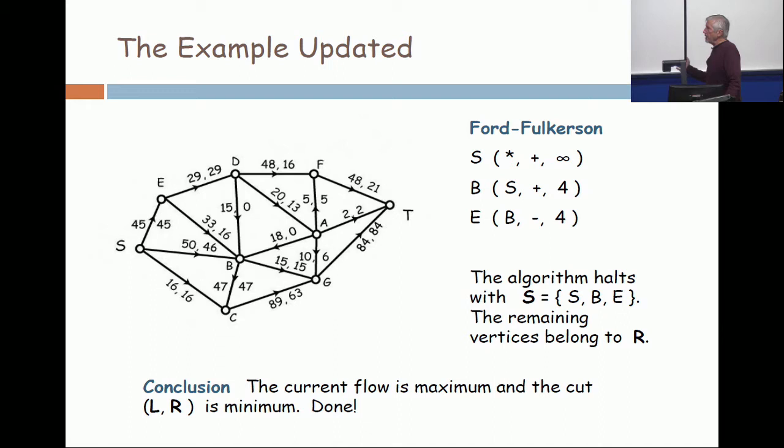All right, now we scan from B, and the only thing that we can label will be E, and E gets its direction, it gets its label from B, but going in the negative direction, and the quantity is four, even though the excess flow is sixteen, you can't get more than four units over there.